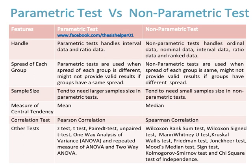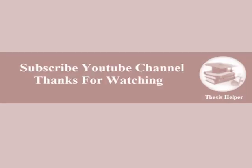Other parametric tests include: z-test, t-test, paired t-test, unpaired t-test, one-way ANOVA, repeated measures ANOVA, and two-way ANOVA. Other non-parametric tests include: Wilcoxon rank-sum test, Wilcoxon signed-rank test, Mann-Whitney U test, Kruskal-Wallis test, Friedman test, Jonckheere test, Mood's median test, sign test, Kolmogorov-Smirnov test, and chi-square test of independence.